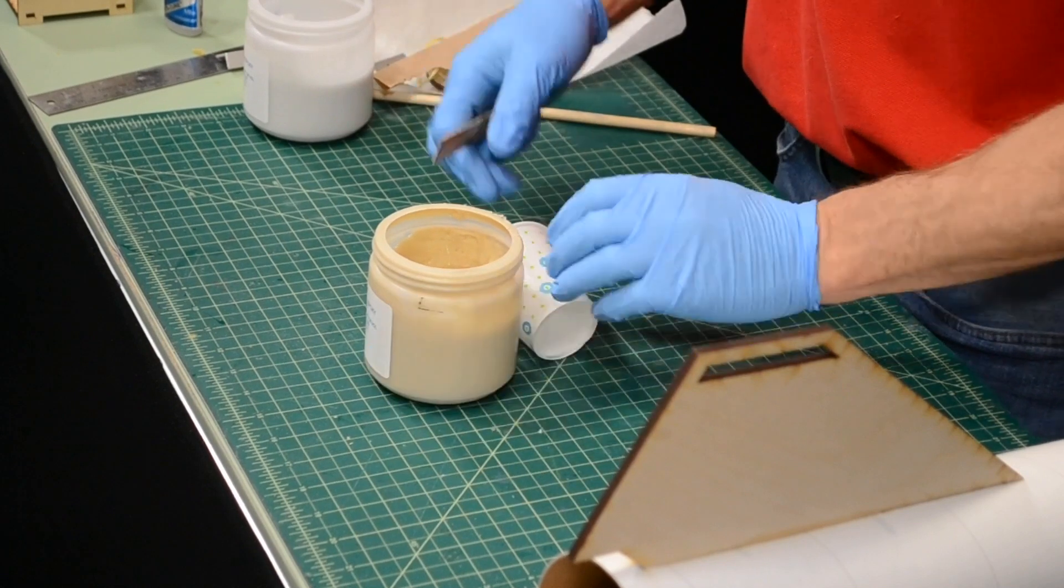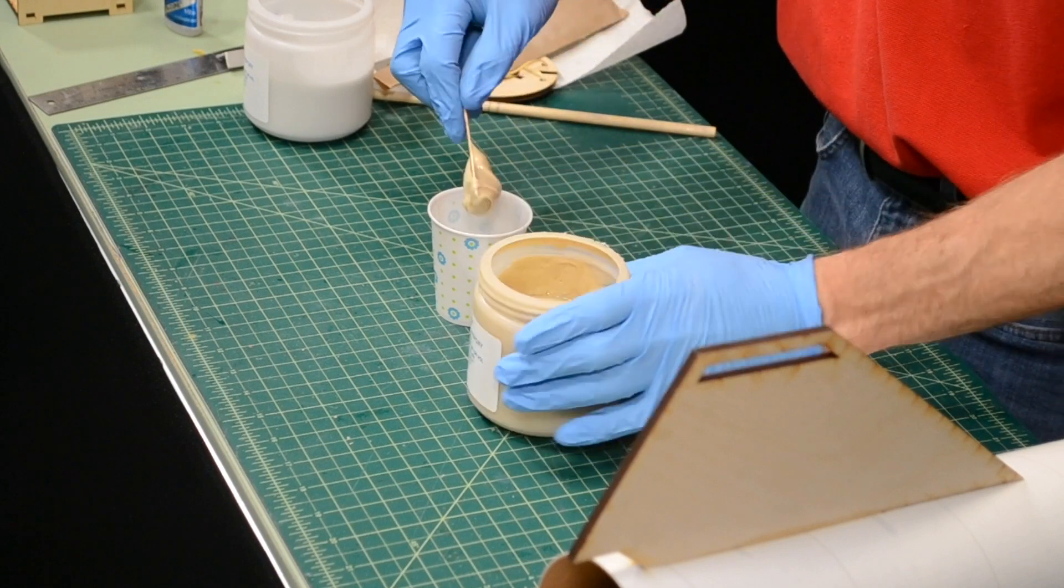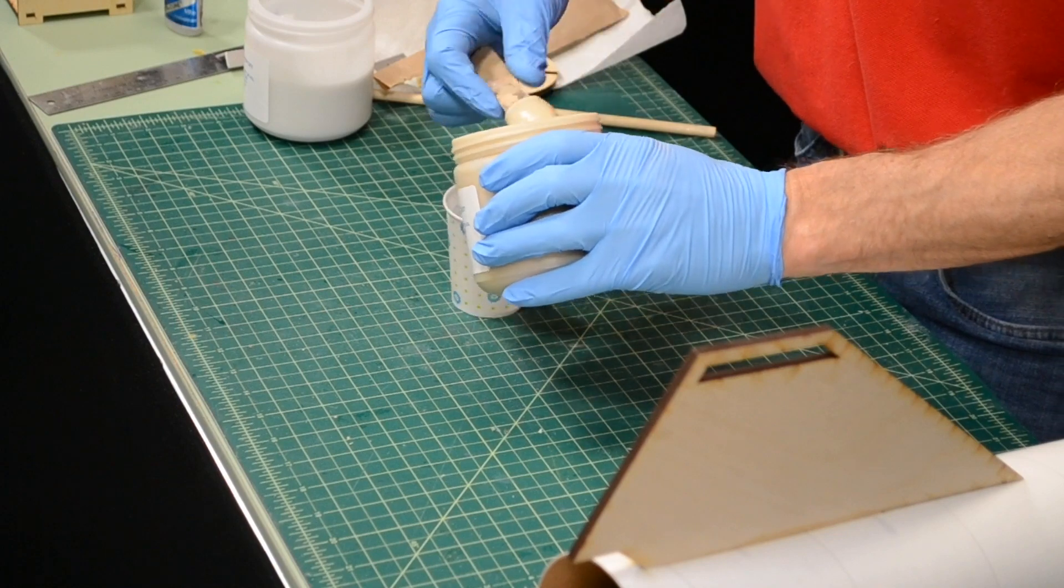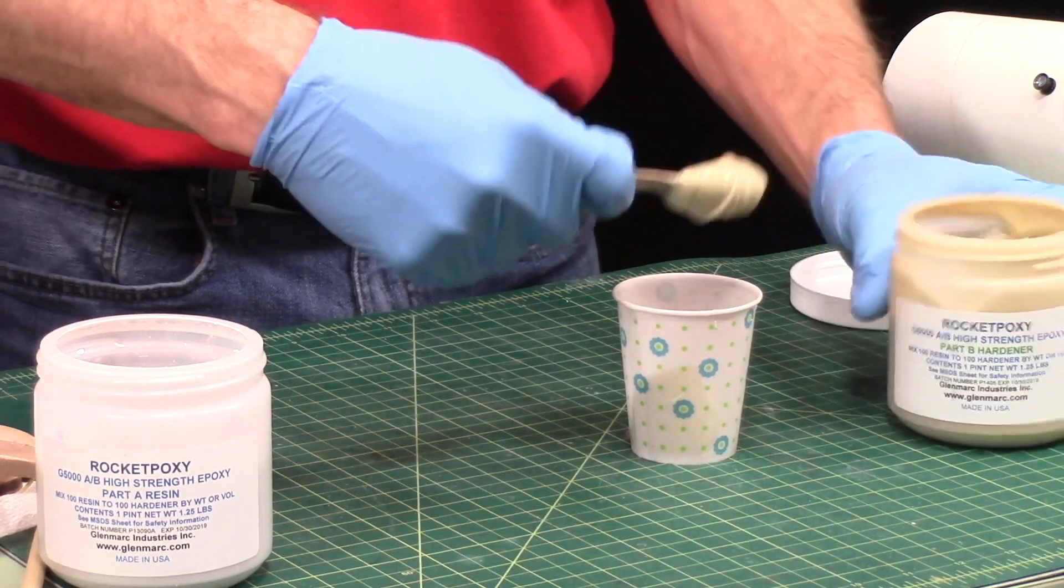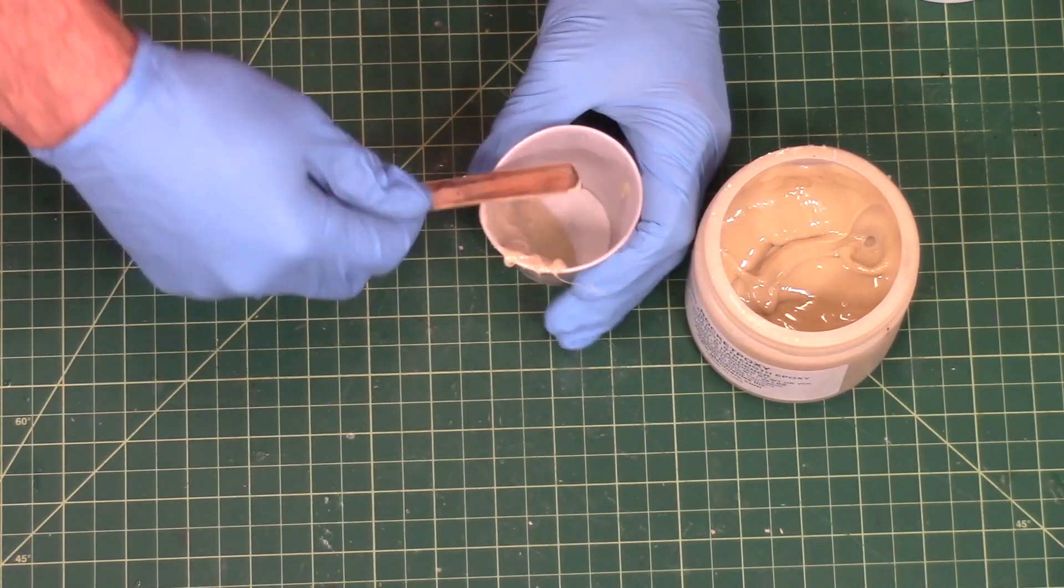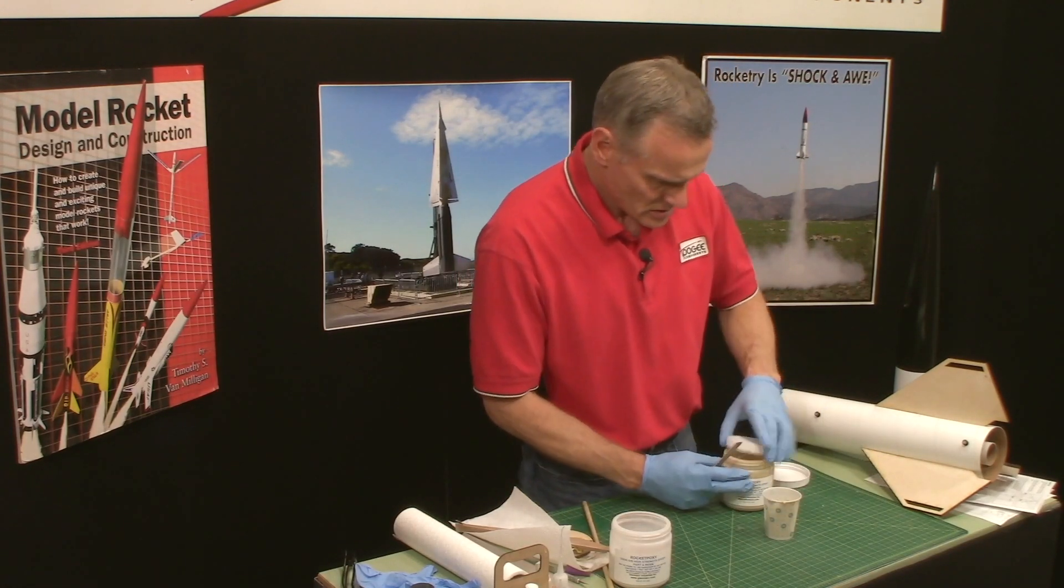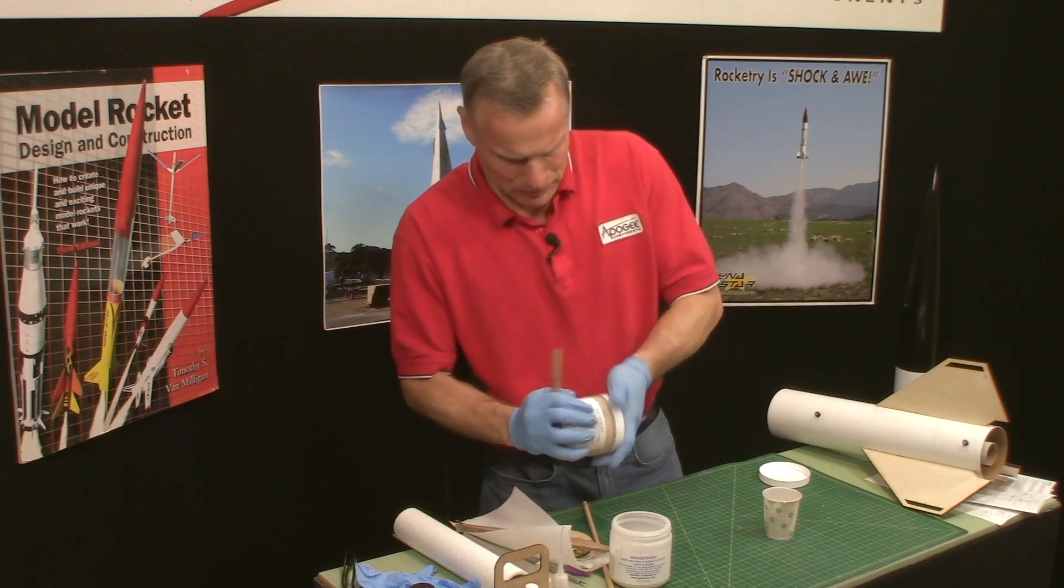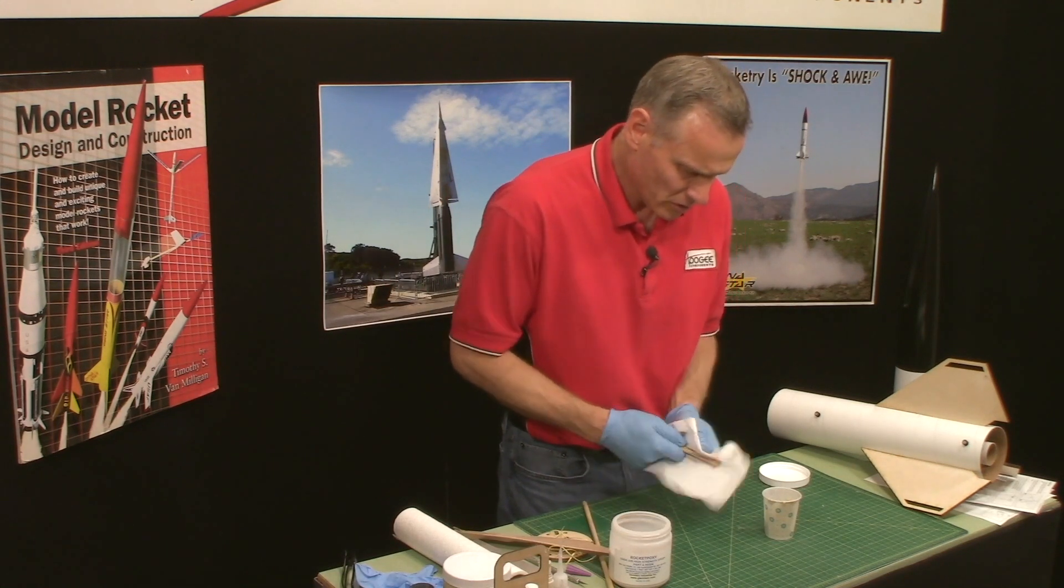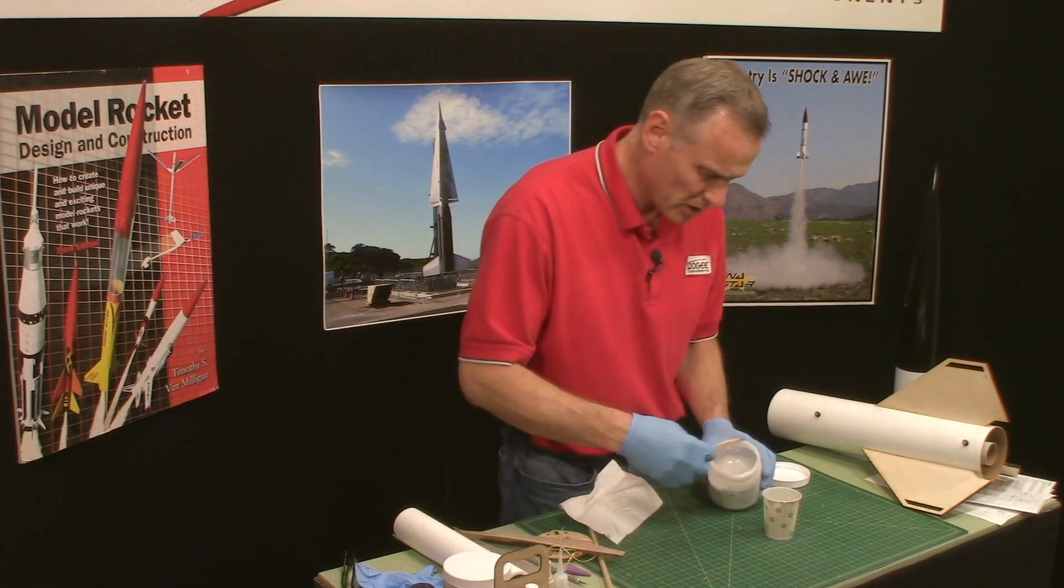And I'll take an equal part of both A and B and you're going to need a lot of this. Okay so that's part A. I'll clean this off because I don't want to get this part A into the part B because I'm going to use the same stick.